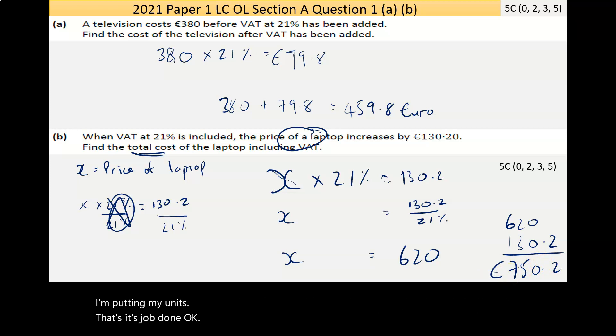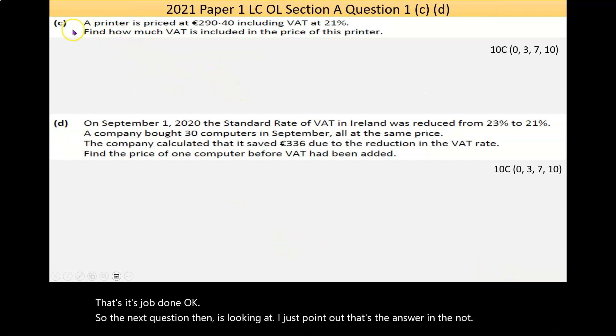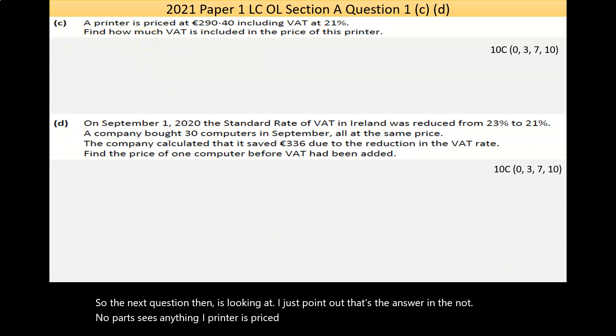The next question is looking at - just to point out that's the answer in the notes. Part C then is saying a printer is priced at €290.4 including VAT at 21 percent. Find how much VAT is included in the price of this printer. Questions like this can be really hard.